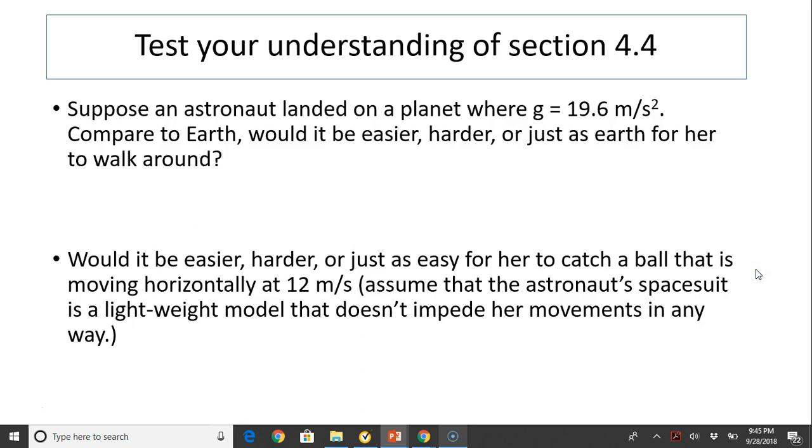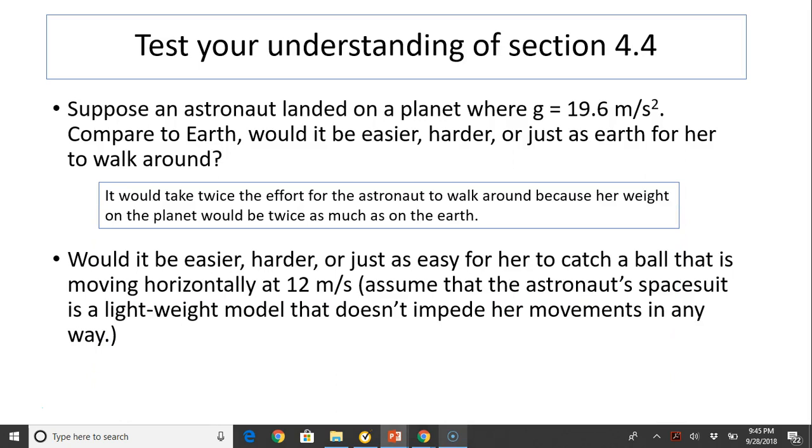Let's take a look, test your understanding. Suppose an astronaut landed on a planet where g is 19.6 meters per second squared. Compared to Earth, would it be easier, harder, or just as Earth for her to walk around? Well, because her weight is doubled, right? So it would be harder for her to walk around. It would be twice. She has to exert twice the effort to walk around.